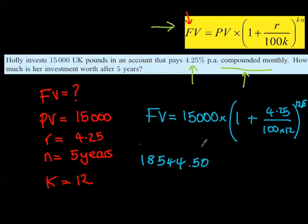So 18,544 pounds and 50 pence. That's how much she's going to get in five years' time. But if the question asks you for the interest, so how much interest she's going to get over five years. This is the present value or the principal or the capital, and this is the return or the future value. But the interest is the difference between the two.